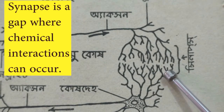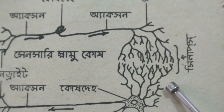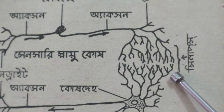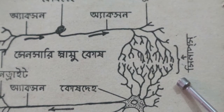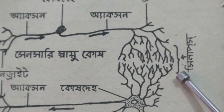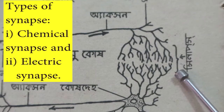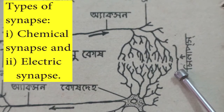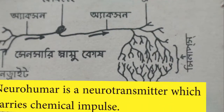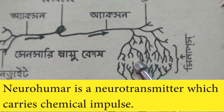Synapses are specialized sites where neurons send and receive information. They transmit signals in only one direction. There are two types of synapses: electric synapses and chemical synapses. In chemical synapses, particular neurotransmitters carry the signals. A neurohumor is a neurotransmitter that carries the chemical impulse.